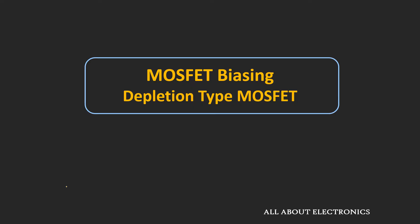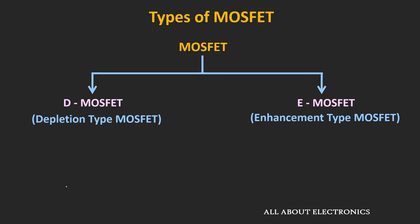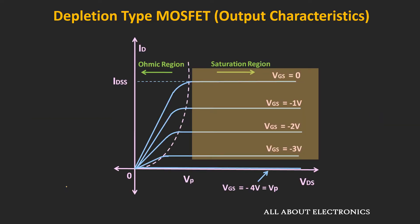When we want to use the MOSFET as an amplifier, it needs to be biased properly. First, let us understand how to bias the MOSFET properly so that it can be used as an amplifier, starting with the depletion type of MOSFET. To use this MOSFET as an amplifier, it needs to be biased in the active region, which for the MOSFET is also called the saturation region.